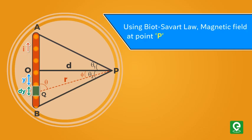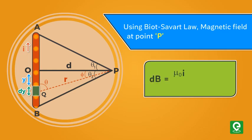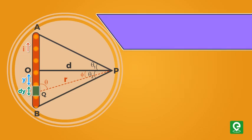Using Biot-Savart Law, the magnetic field at point P due to the small current element is given by the relation dB equal to mu naught into I divided by four pi multiplied by dy sine theta by R square.